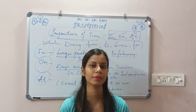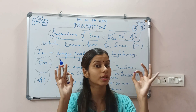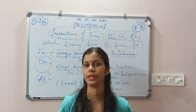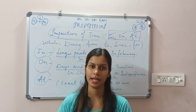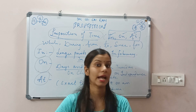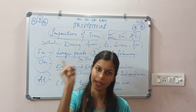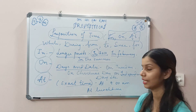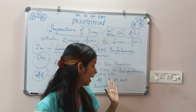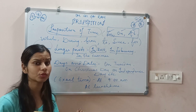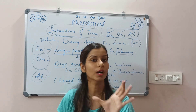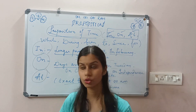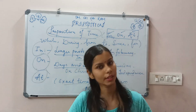Next is 'at'. We use 'at' for a particular, exact time. For example: 'I will go for dinner at 9 PM' — mujhe 9 PM mein khana hai, toh 9 PM is the exact time. 'At 9 AM,' 'at lunch time' — so the particular exact time has been denoted by the word 'at'. Toh hame yaad rakhna hai: we use 'in' for the longer period, 'on' for days and dates, and 'at' for the particular exact moment.